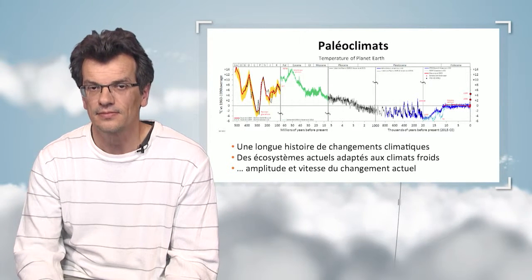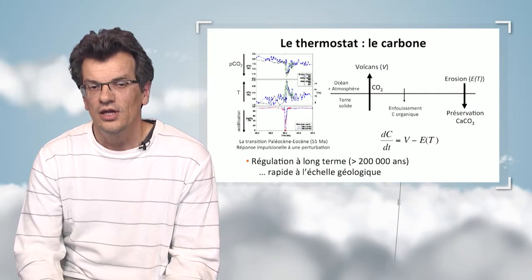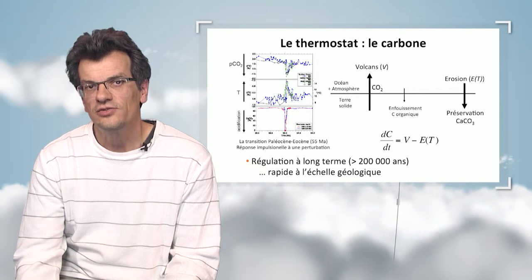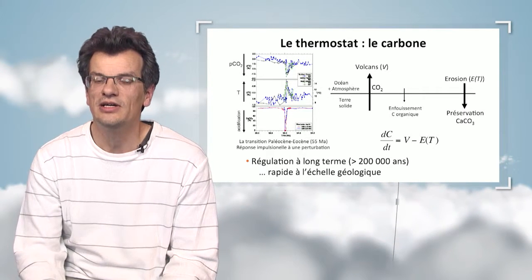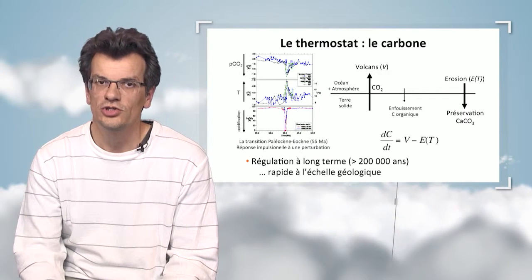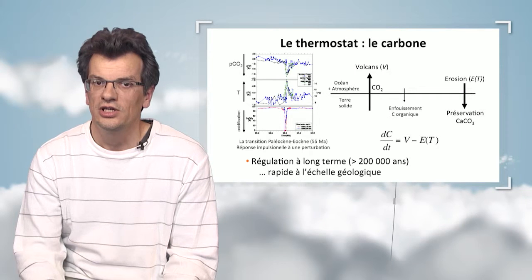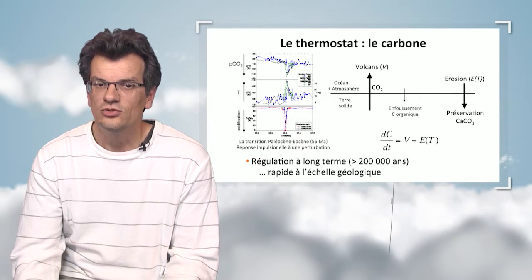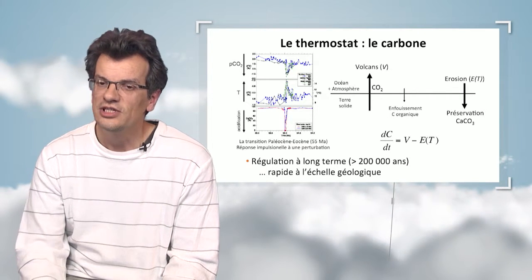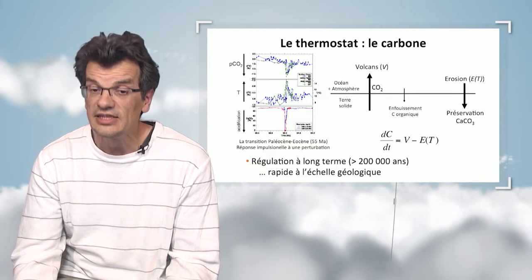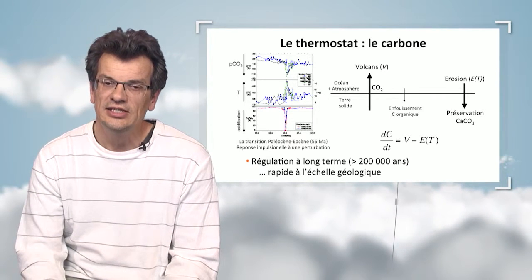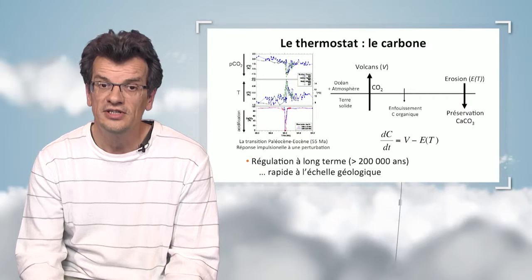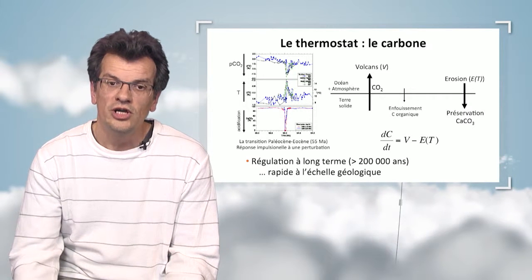We have had fluctuations during the last glacial and interglacial periods. The interesting question is: what allows the climate to regulate itself based on geological time scales? Regulation systems — well, there aren't that many, interestingly. And the most important is the carbon cycle.